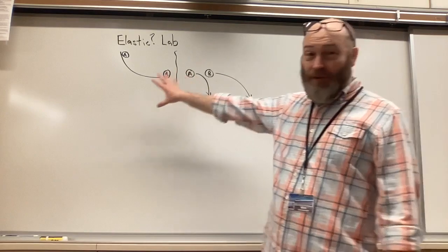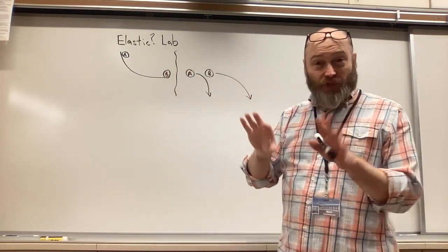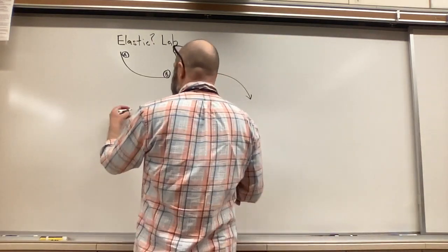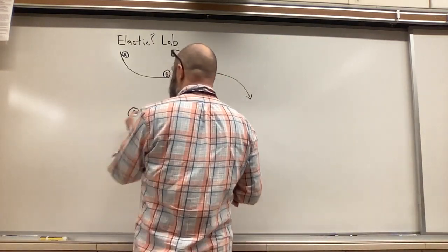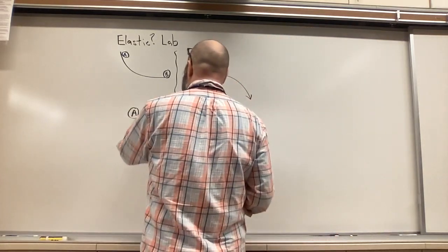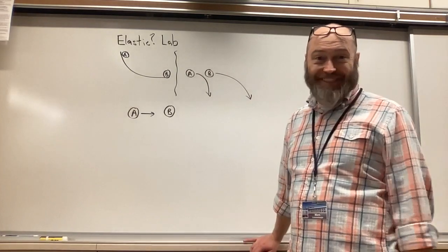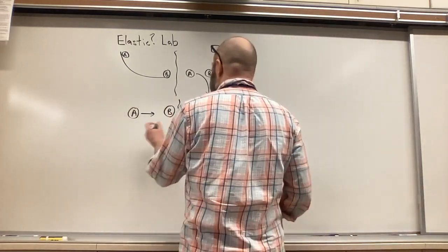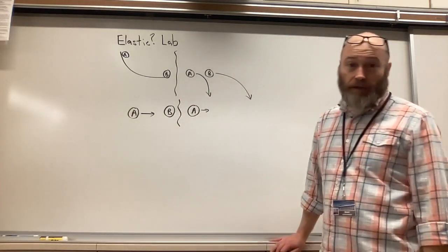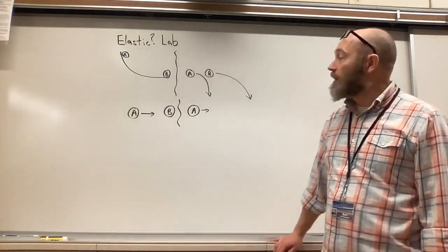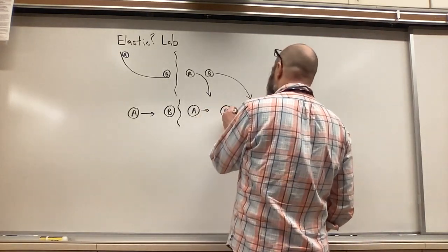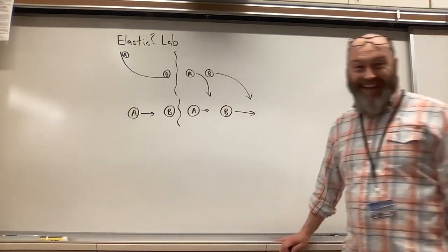So let's draw a picture of what's happening right before and right after. Right before, the steel marble — I'll call it marble A — is moving that way, and the glass marble is just hanging out. Right after, the steel marble is still moving the same way but at a lower speed, because it's more massive, and the glass marble is moving off like that.